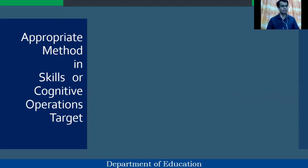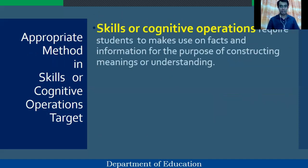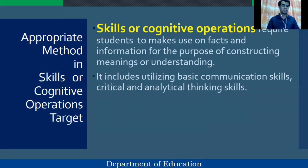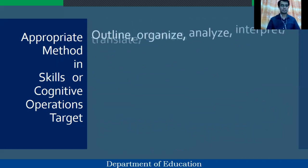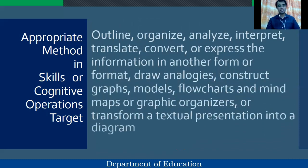Appropriate methods for skills or cognitive operations targets require students to make use of facts and information for the purpose of constructing meanings and understanding. It includes utilizing basic communication skills and critical and analytic thinking skills. How do we want students to provide evidence of what they can do with what they know? Suggestions include asking them to outline, organize, analyze, interpret, translate, convert, or express information in another format; draw analogies; construct graphs, models, flowcharts, and mind maps or graphic organizers; or transform a textual presentation into a diagram.